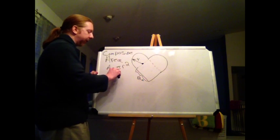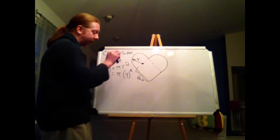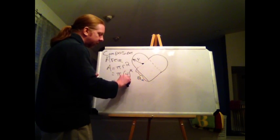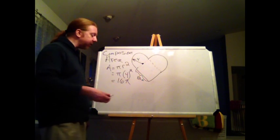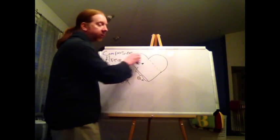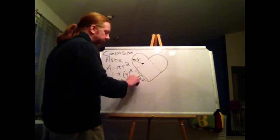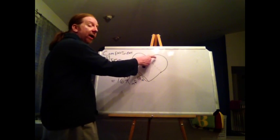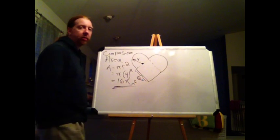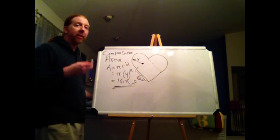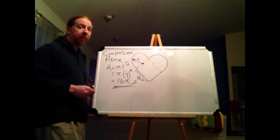4 squared. So plug in pi times 4 squared is going to give me 16 pi. Now I have an option here. I could say each of these has an area of 8 pi square inches, or I could say that these two half circles added together have an area of 16 pi square inches. It really doesn't matter either way because I'm going to end up back at that 16 pi square inches.